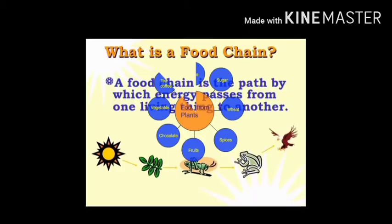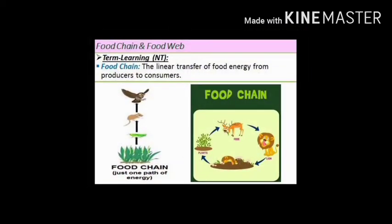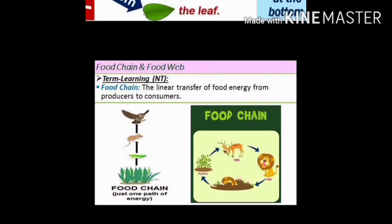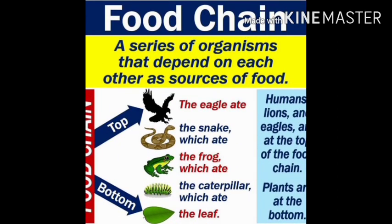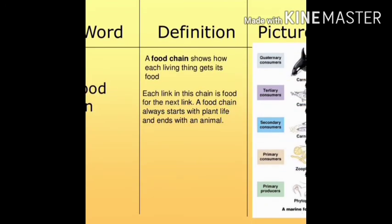Our next topic is the food chain. A food chain is the path by which energy passes from one organism to another. It is a linear sequence of food energy from producers to consumers. Producers are green plants, and organisms which consume green plants are called consumers. The food chain always starts from green plants and ends at top consumers, mostly carnivores.